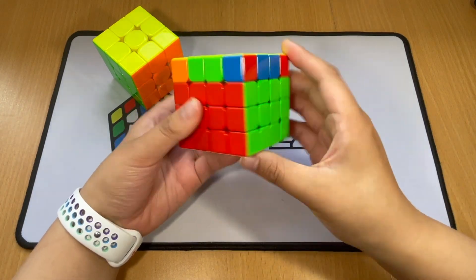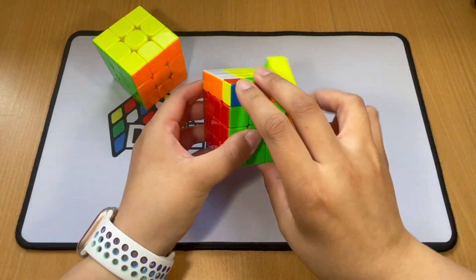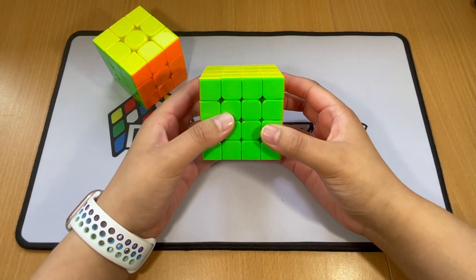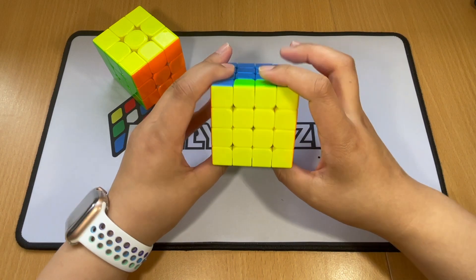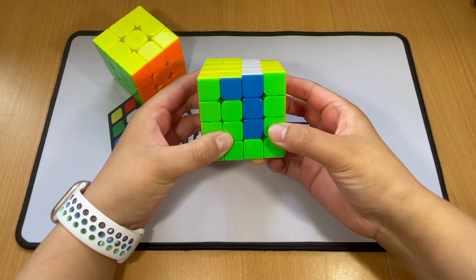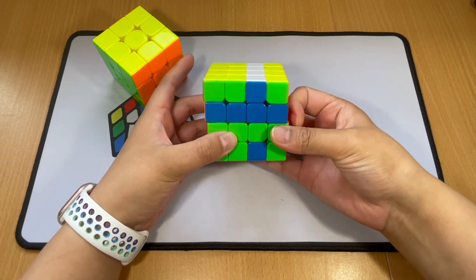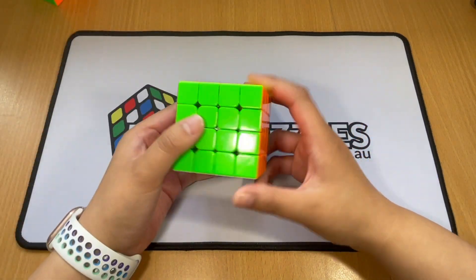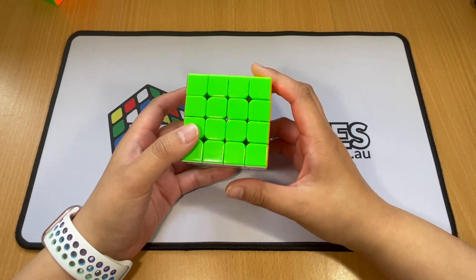Yellow top. If you know full PLL, you can solve it. There's another algorithm you can learn which helps if you have this scenario, which sometimes you do get. 4x4 is really fun in that sense, and I really enjoy it as a cube.